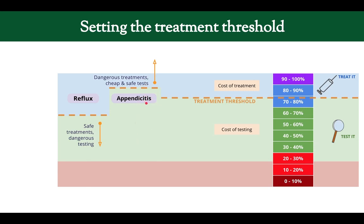Let's say we have appendicitis — high probability but we're not sure, and the treatment is surgery. We can do a CAT scan, which is relatively safe, but we don't want to take someone to the operating room unnecessarily. So we raise this threshold. Conversely, let's talk about reflux. We're pretty sure somebody has heartburn, but testing requires either a blood test or a costly endoscopy — potentially dangerous. The treatment is pretty safe: just stop eating spicy foods and take some antacids. So you might want to pull this threshold down, making the treated zone bigger and the tested zone smaller, because the treatment is fairly benign.